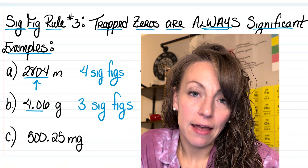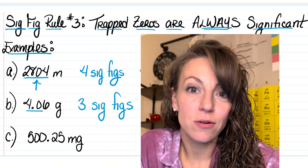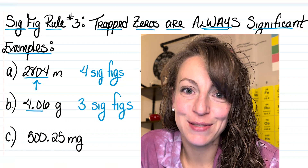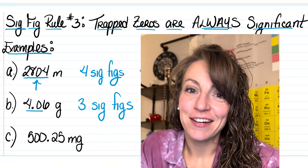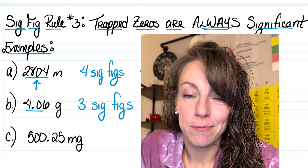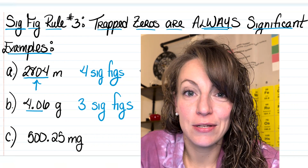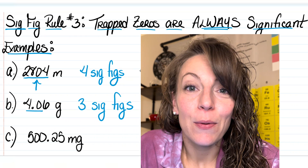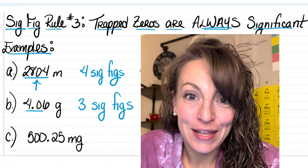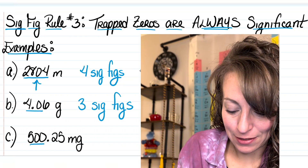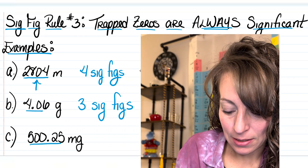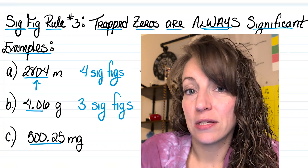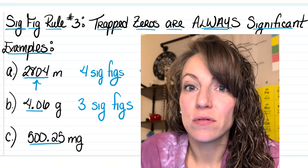In letter C I have five hundred point two five milligrams. Here we've increased our number of trapped zeros to two, but we have a total of five significant figures because all five of those digits count.